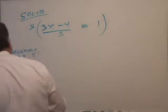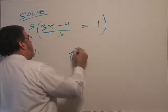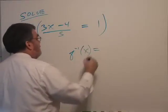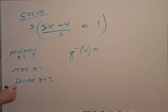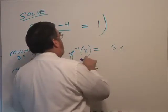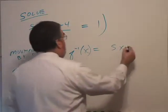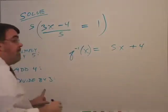I'm going to create a function called f inverse of x. It's an inverse function I'm building here. We take the input and multiply it by 5, so the input is x, multiply it by 5, and then add 4, and then divide by 3.